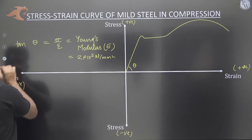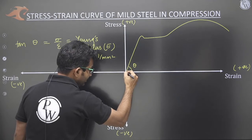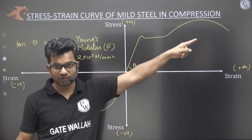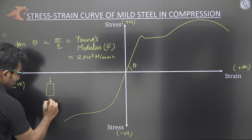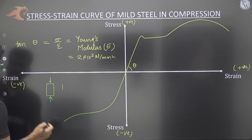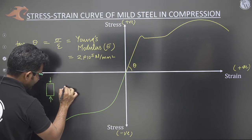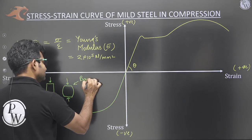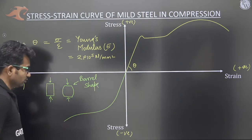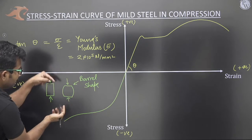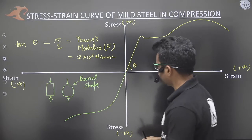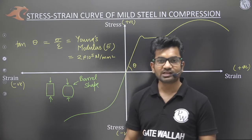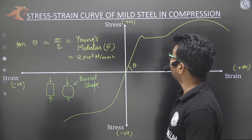In compression, we do not find all the same points as in tension. The specimen keeps on bulging: the length keeps reducing and the specimen bulges from the middle, giving a barrel shape. We will not find any yield plateau in compression. The stress strain curve of mild steel in compression is not very important; the tension curve is what matters.